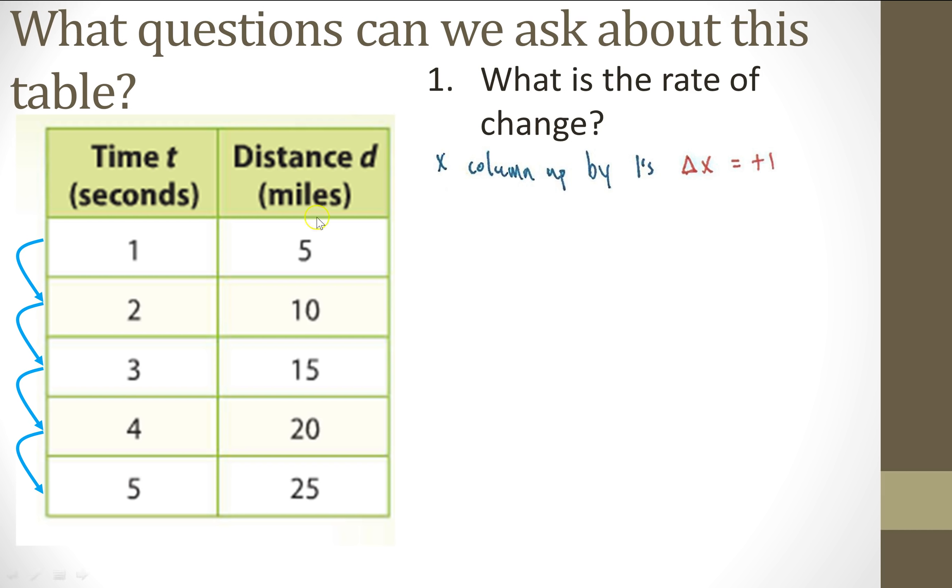So I'm going to take a look at the right hand column or the distance d in miles. And I'm going to see how much each of these change by and if that number is consistent. I see that all of the Y column adds up by fives. So I know that the change in Y is five. So we know that rate of change is the change in Y over the change in X, which means that it is equal to five over one.